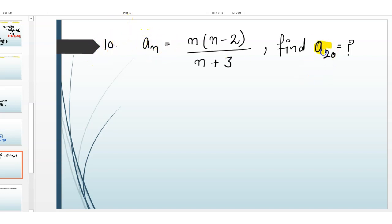Today's question is find the 20th term having nth term is n multiplied with n minus 2 divided by n plus 3.